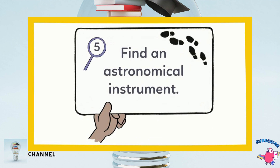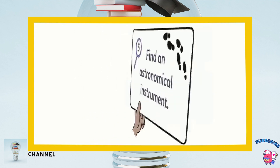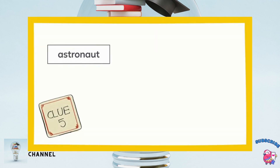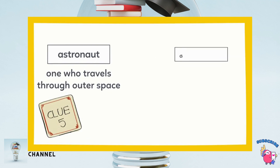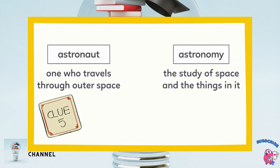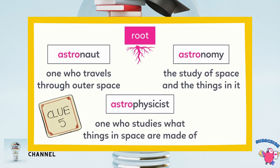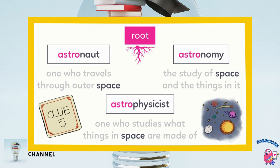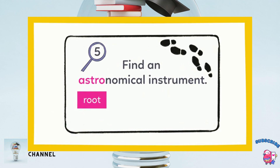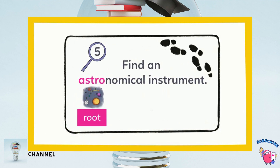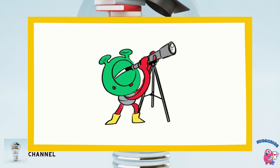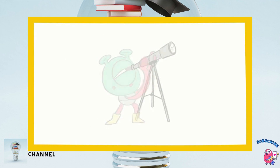Find an astronomical instrument. We can do this! The clues are: astronaut — one who travels through outer space; astronomy — the study of space and the things in it; astrophysicist — one who studies what things in space are made of. The root astro means outer space. So an astronomical instrument has something to do with outer space — it must be that telescope! Now we can see the last clue.